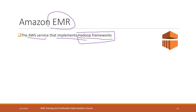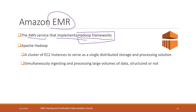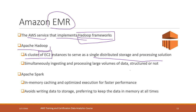Automatically in the cloud. EMR supports Apache Hadoop — those are clusters of EC2 instances to serve as a single distributed storage and processing solution. They also implement Apache Spark on EMR, which provides in-memory optimized execution for faster performance.